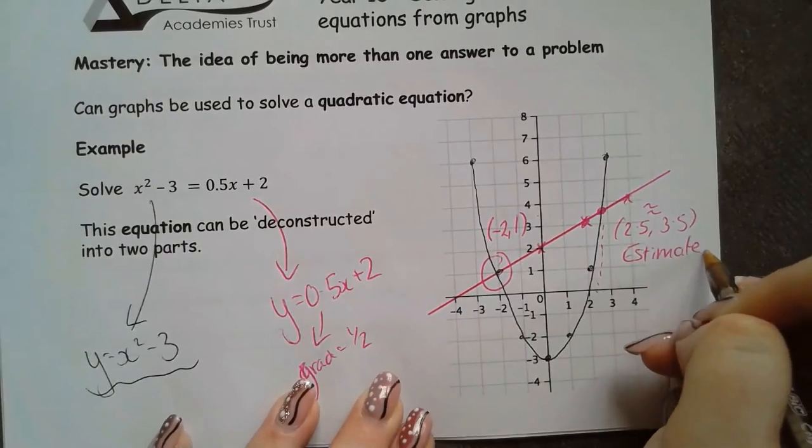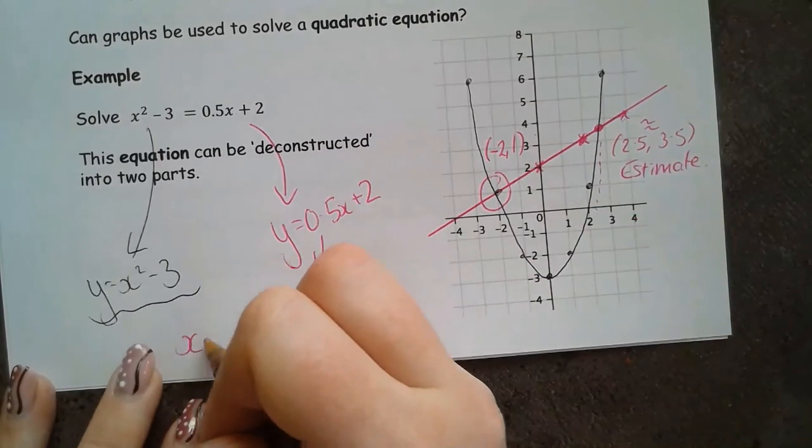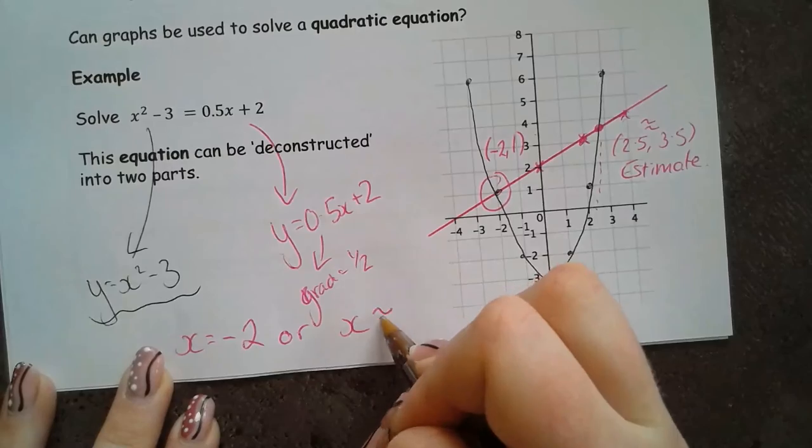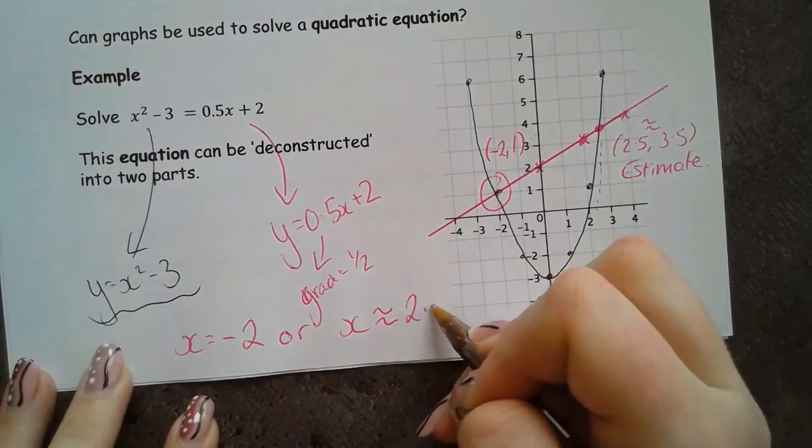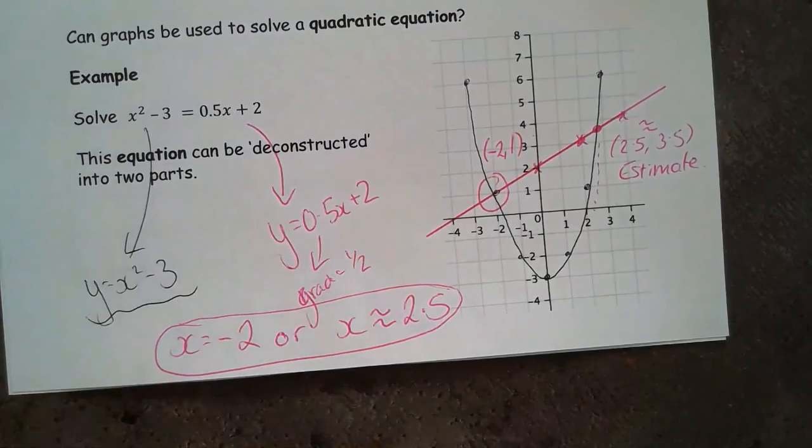So when I give my solution, I should say very clearly that x is either negative 2 or it's approximately equal to 2.5. It is not exactly equal, just approximately.